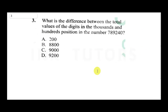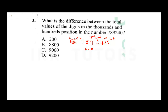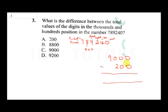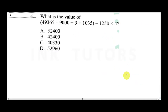Question three asks for the difference between the total values of the digits in the thousands and hundreds positions in the number 789,240. Writing it out: units, tens, hundreds, thousands, ten-thousands, hundred-thousands. The thousands digit is 9, giving nine thousand, and the hundreds digit is 2, giving two hundred. Subtracting: 9000 minus 200 equals 8,800, so the answer is B.